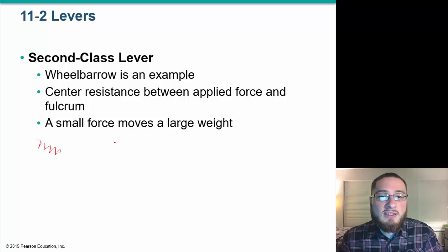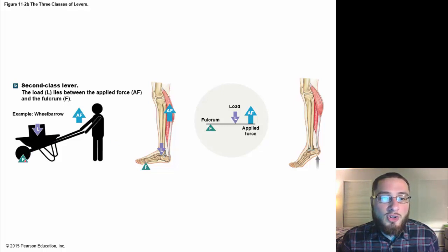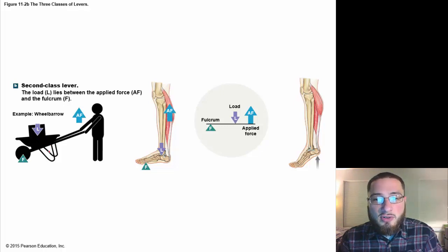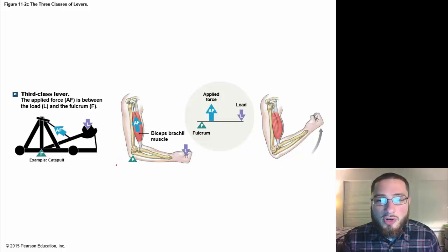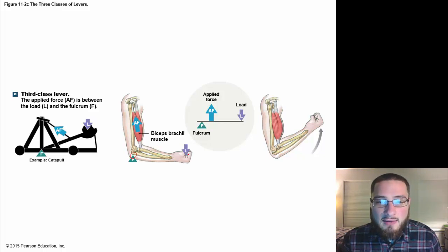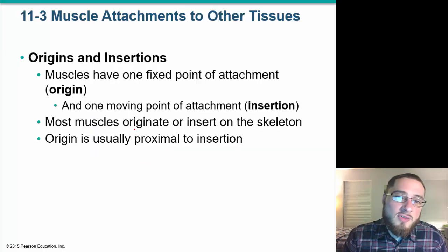The second class lever is like a wheelbarrow — you have your fulcrum across from your applied force, and the load is in the middle. Then you have third class levers, which we talk about a lot in the human body. The elbow is a third class lever; it's more like a catapult where the fulcrum is away from the lever and the applied force is pulling at that lever. So those are the three classes of levers.